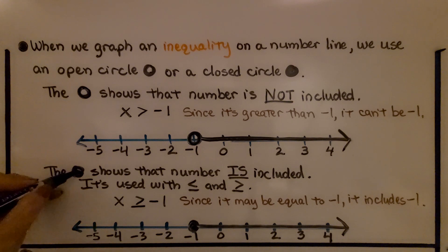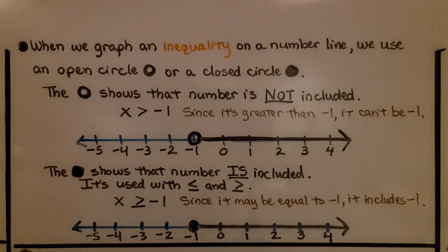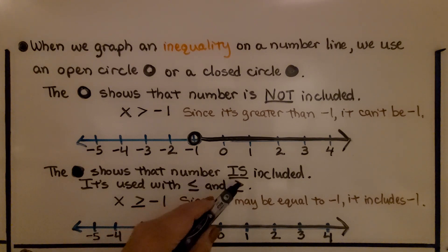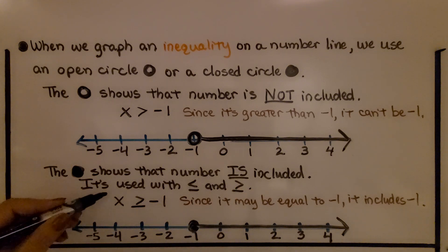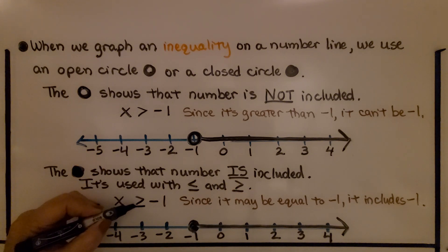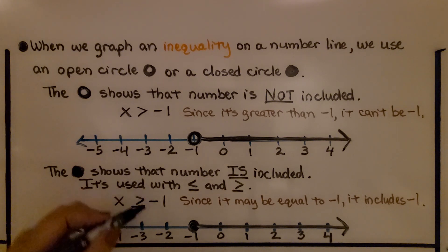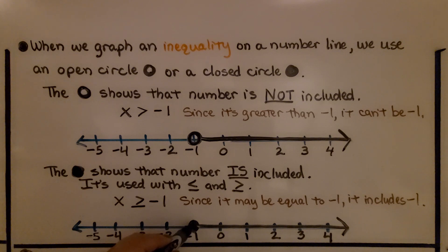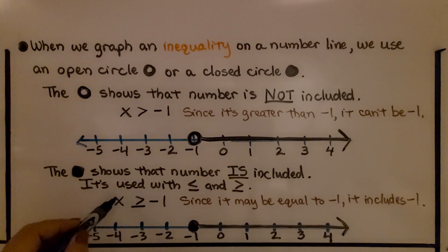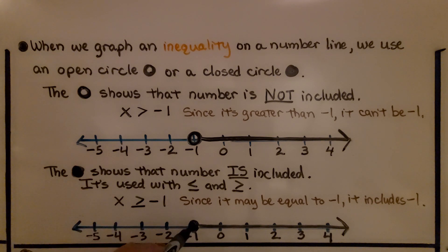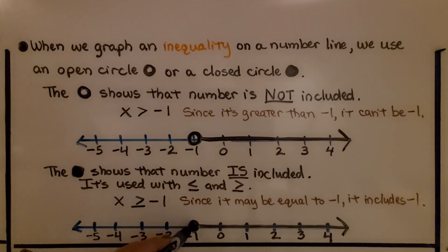The filled-in circle shows the number is included. It's used with less than or equal to and greater than or equal to. So if we have x is greater than or equal to negative 1, it might be negative 1, so we use a closed, filled-in dot. Our arrow goes to the right to show it could be greater, and the filled-in dot shows the 'or equal to.'